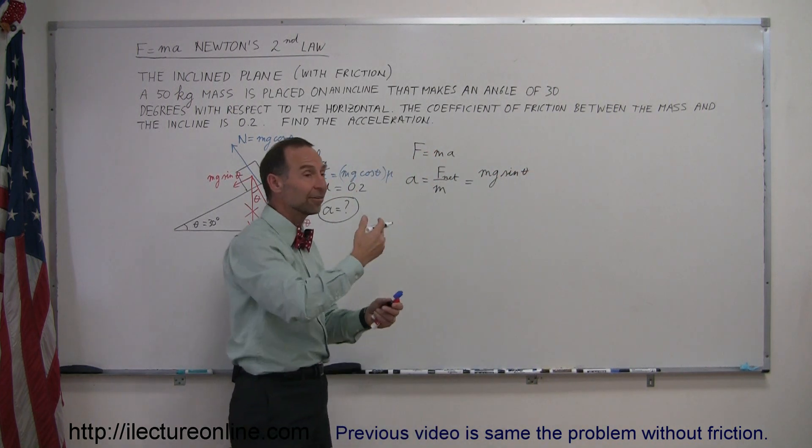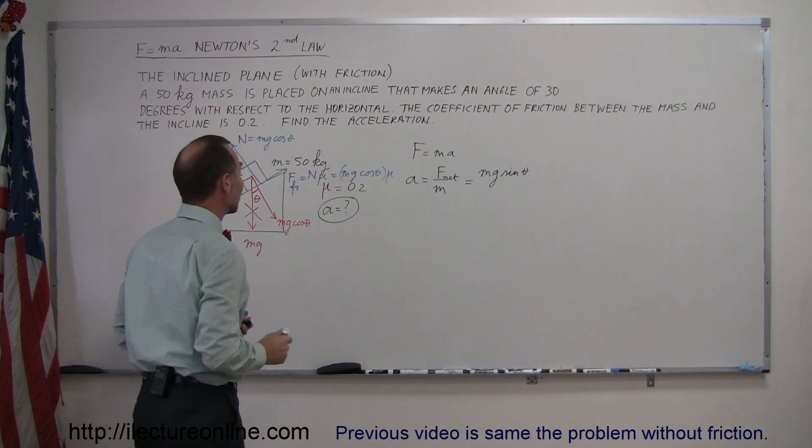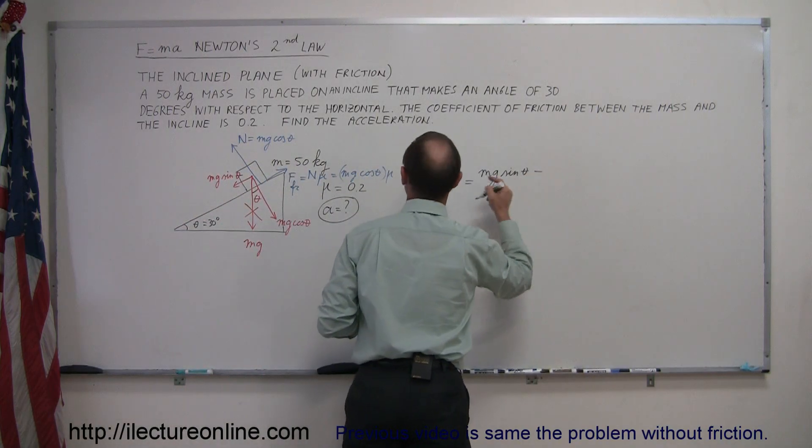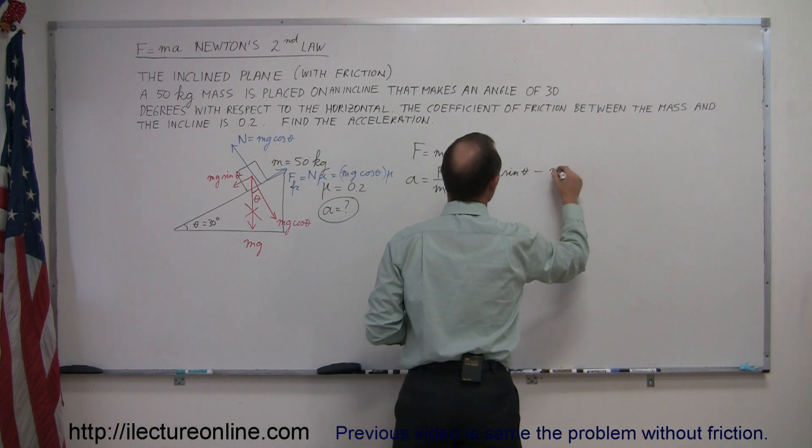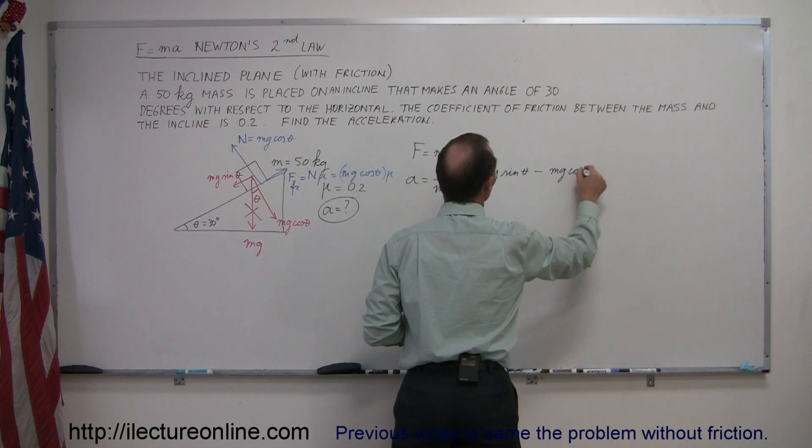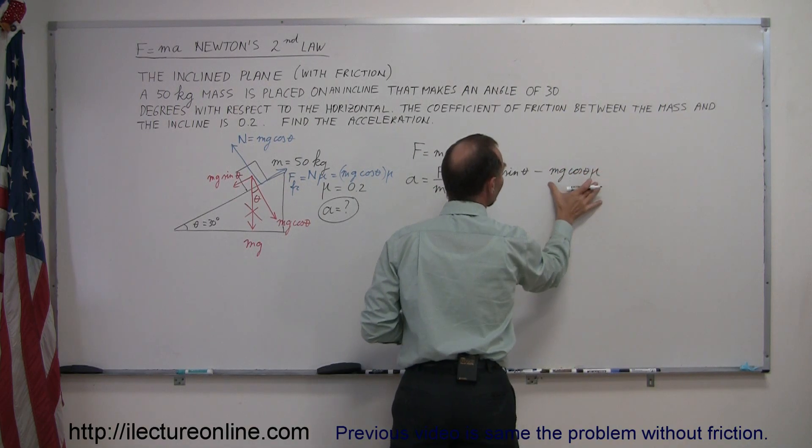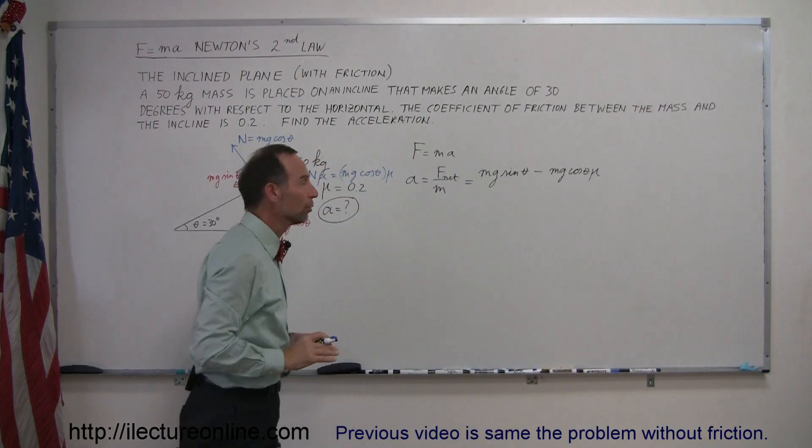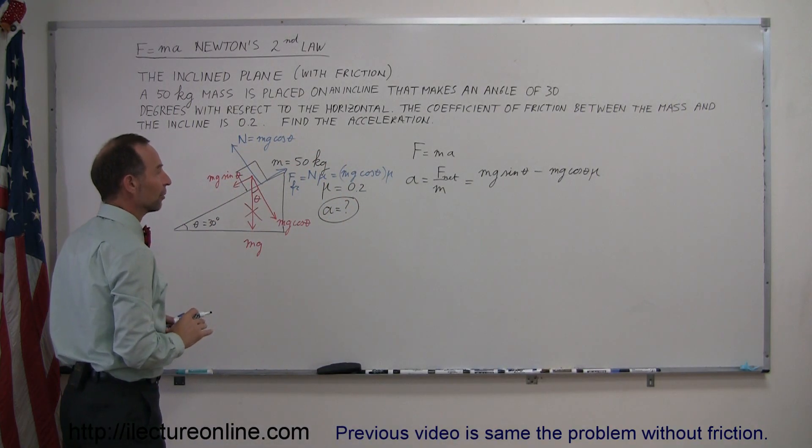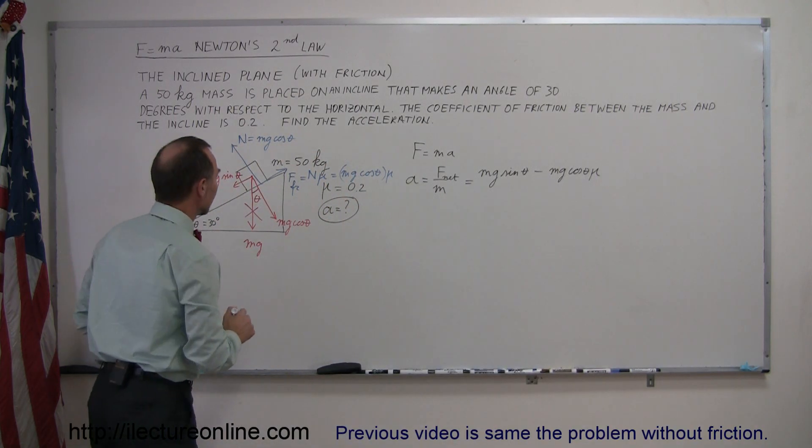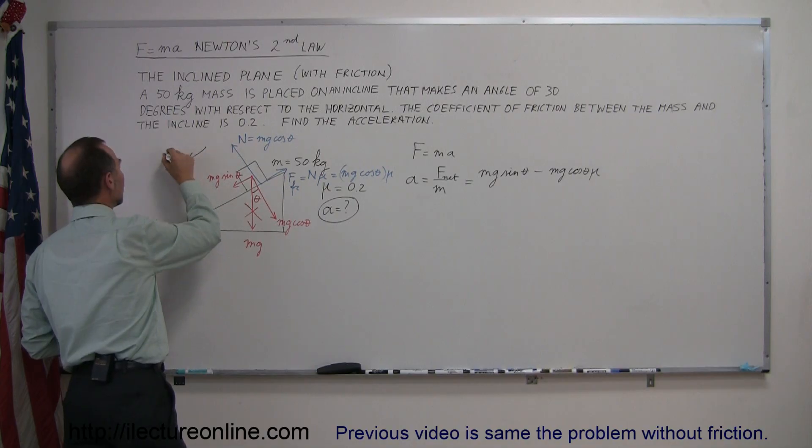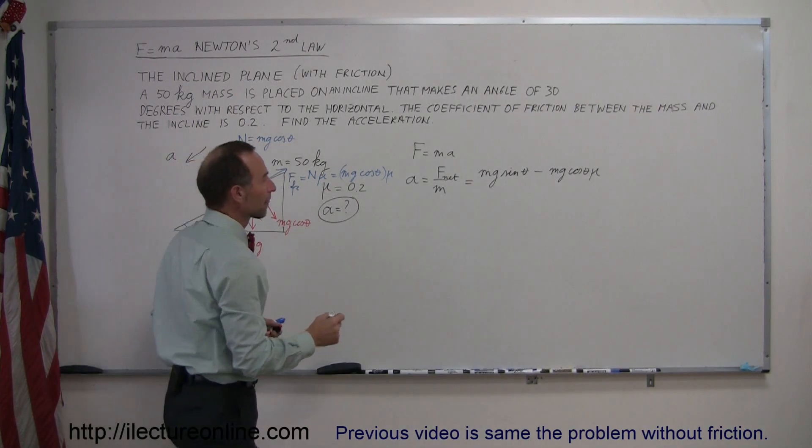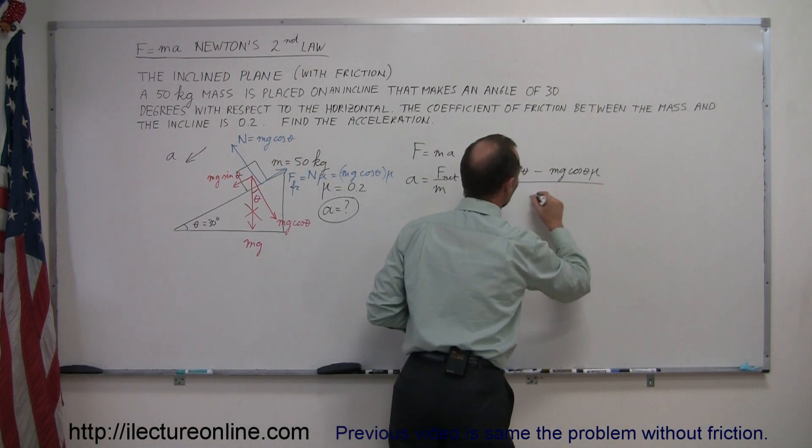then that force then becomes mg sine theta, which is the force that aids acceleration or causes the acceleration to happen, minus the friction force, which is the mg cosine theta times mu. This is the friction force trying to keep the object from accelerating. Of course, I'm assuming that the acceleration will be in this direction, and I divide that by the total mass.